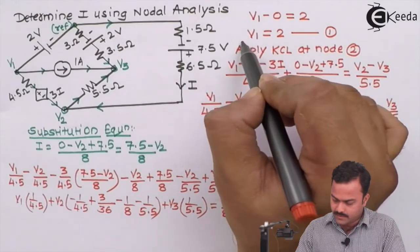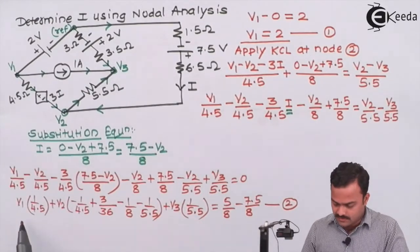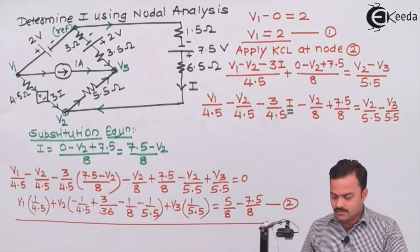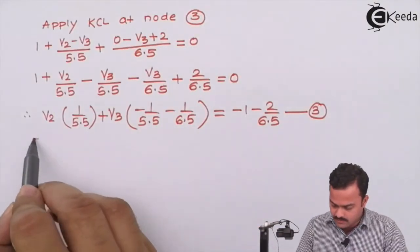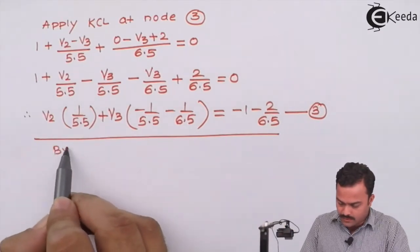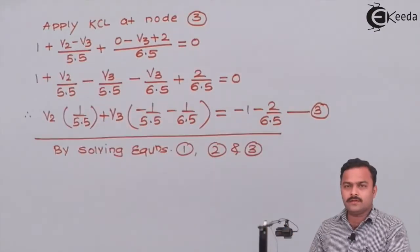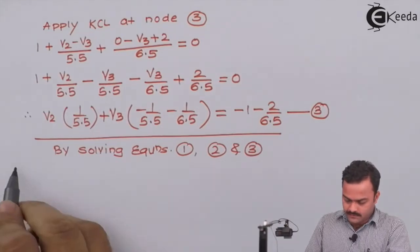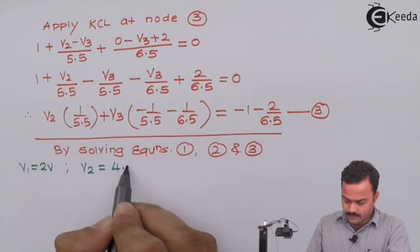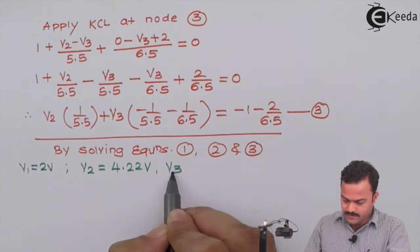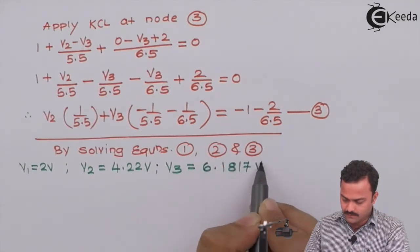So we now have three equations. Equation 1 is simply v1 = 2 volts. Equation 2 is the more complex expression in terms of v1, v2, and v3, derived after the substitution. Equation 3 is the KCL equation at node three. Solving all three equations simultaneously gives v1 = 2 V, v2 = 4.22 V, and v3 = 6.1817 V.